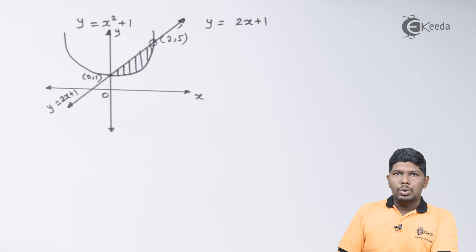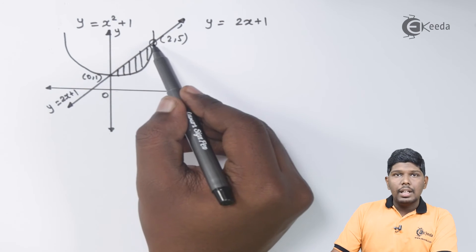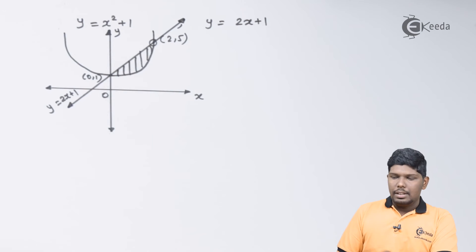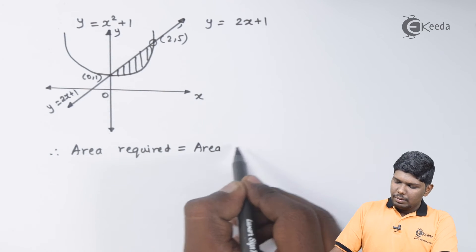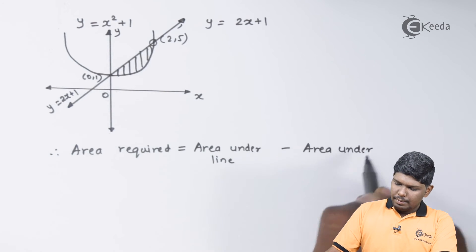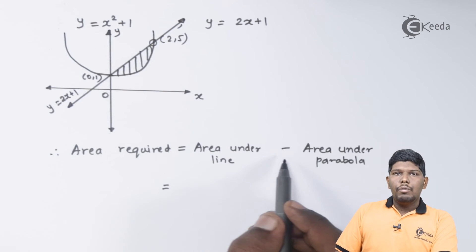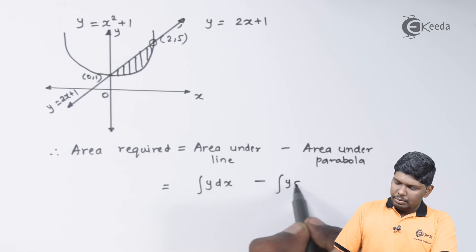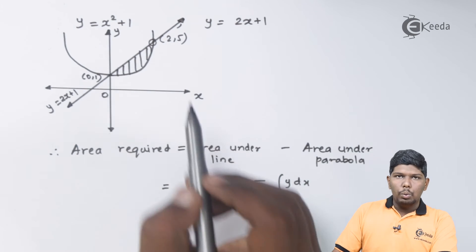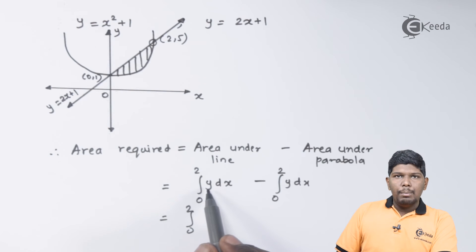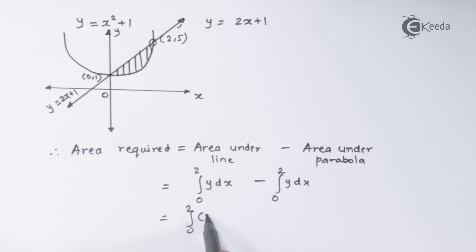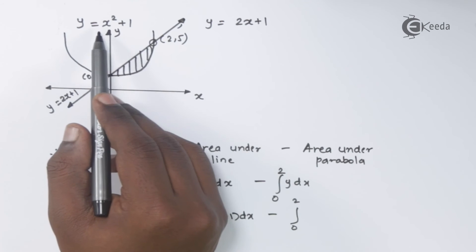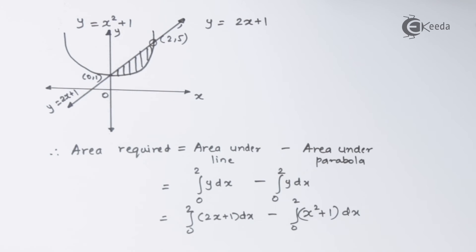To find this area, we compute the area under the line from 0 to 2 minus the area under the parabola from 0 to 2. Both use the formula integral of y dx with limits 0 to 2. The value of y from the line equation is 2x plus 1, and from the parabola equation is x squared plus 1.